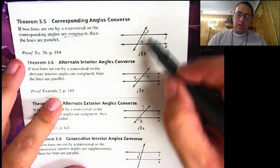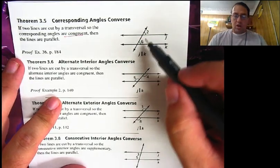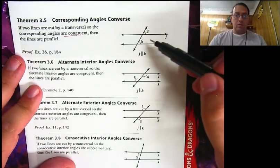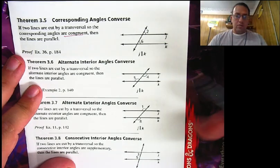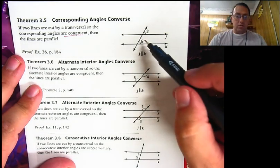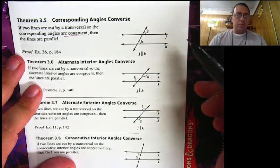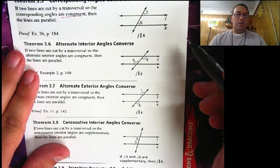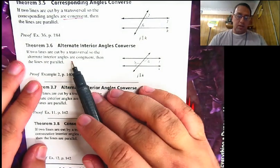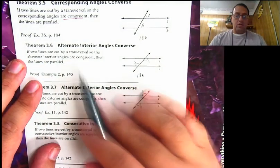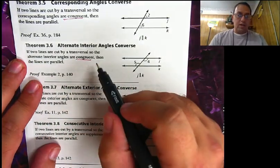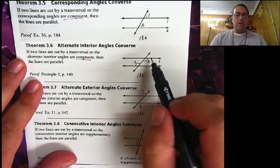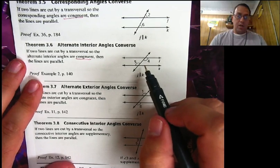So since we know that angle two and angle six are corresponding — because they're in the same position, both in the top right corner side of the intersection — and since they're congruent, that means j must be parallel to k. Same thing with alternate interior angles converse: if two lines are cut by a transversal so that alternate interior angles are congruent, then the lines are parallel. So since angle four is congruent to angle five, j is parallel to k.